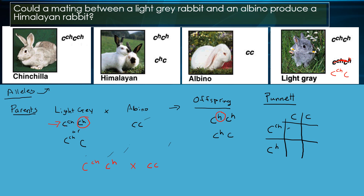Let's see what our offspring are. First we've got C^CH C — that's a light gray, not the right kind. C^CH C — another light gray, not the right kind. Then C^H C — look at that, we have a Himalayan! And another Himalayan. So it turns out we can produce 50% Himalayan when we cross a light gray with an albino.